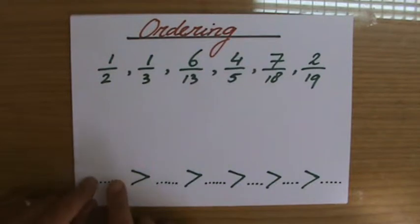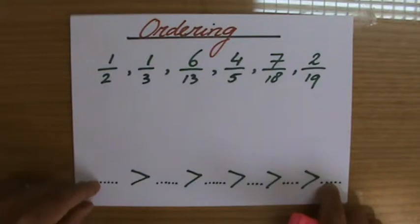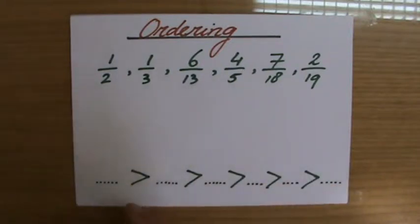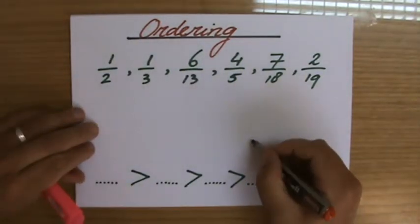I should put my largest value here because a crocodile always eats the large value, and my smallest value over here. So this is then written in descending order, from big to small, descending order.